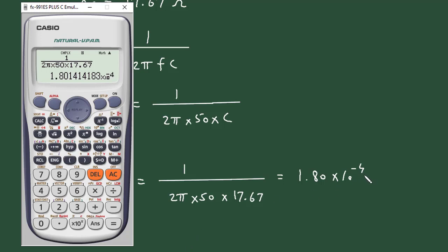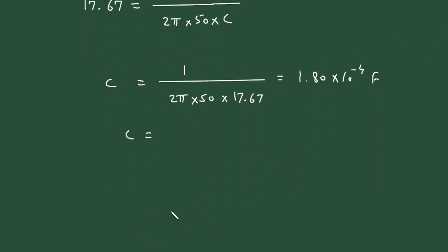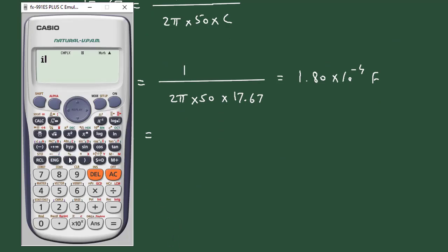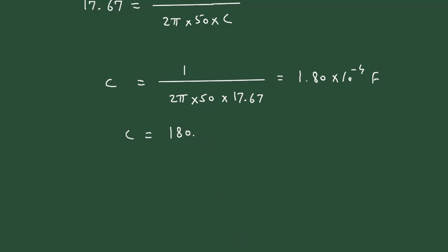Since it is capacitance, its unit is farad. Therefore C = 1.80 × 10⁻⁴ farad, which we can also write as 180.14 × 10⁻⁶ farad. Therefore C = 180 microfarad, since 10⁻⁶ means microfarad.